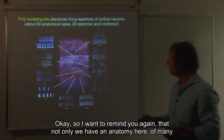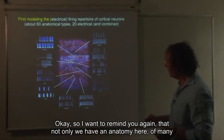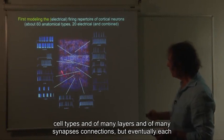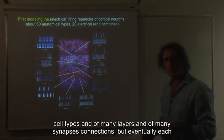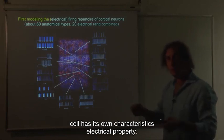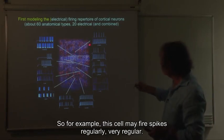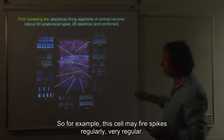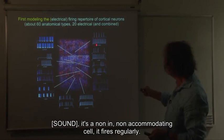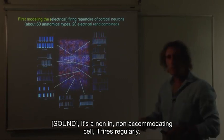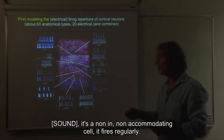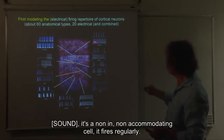I want to remind you that not only do we have anatomy of many cell types, layers, and synaptic connections, but eventually each cell has its own characteristic electrical properties. For example, this cell may fire spikes regularly, very regular. It's a non-accommodating cell that fires regularly.